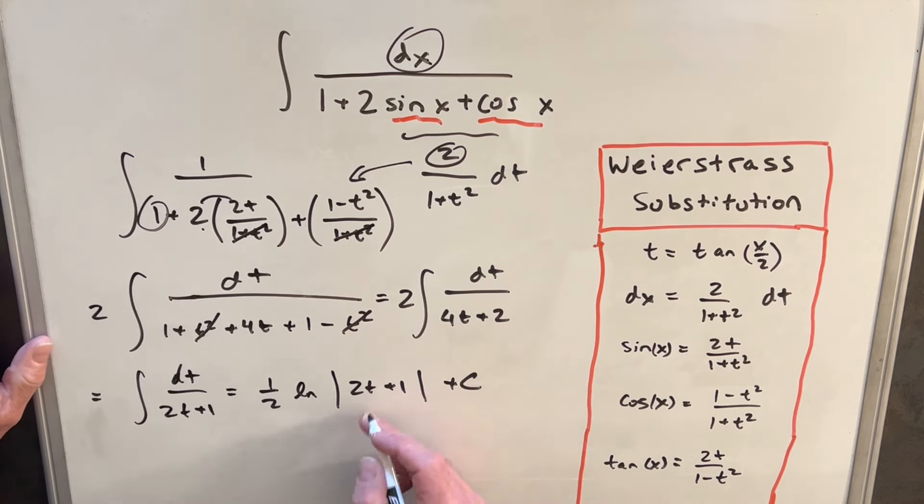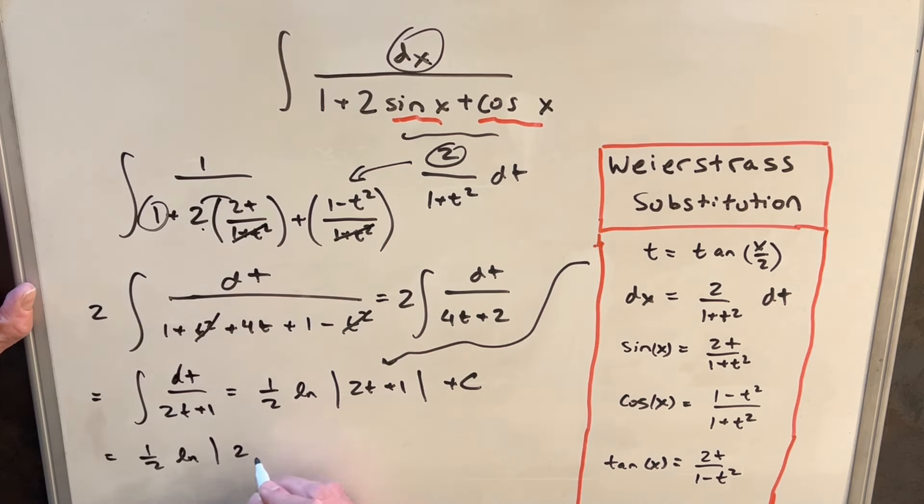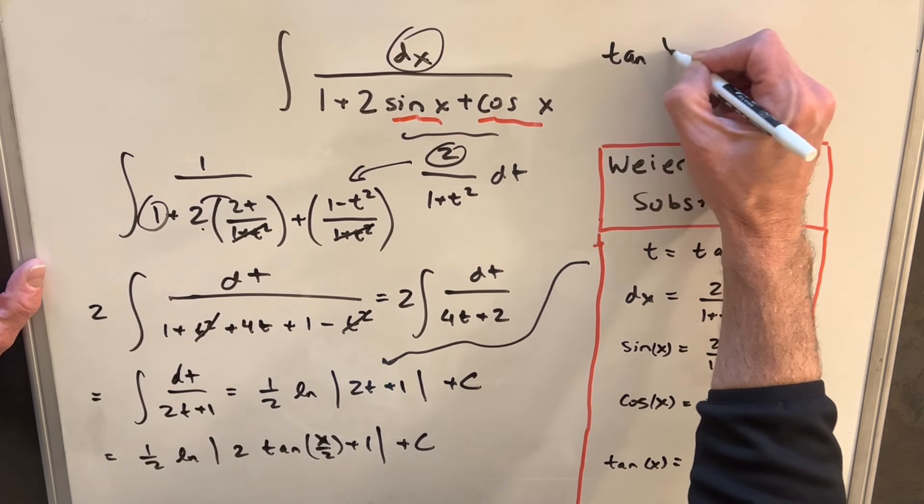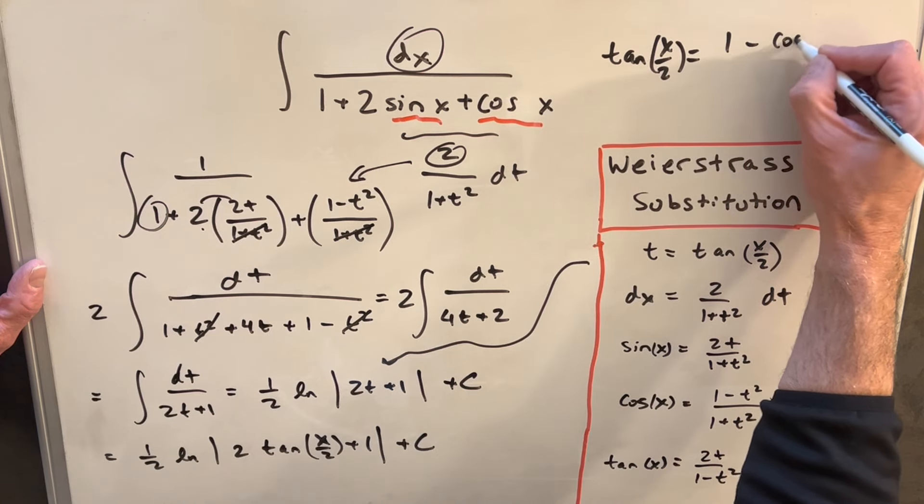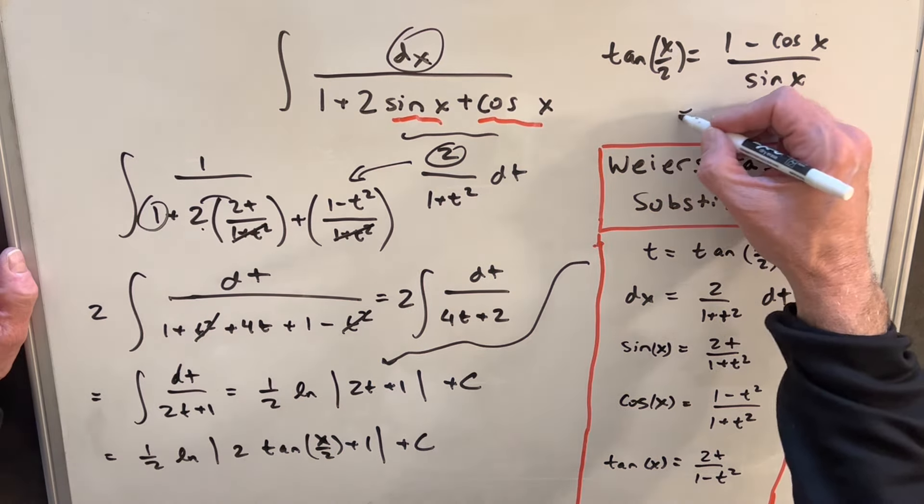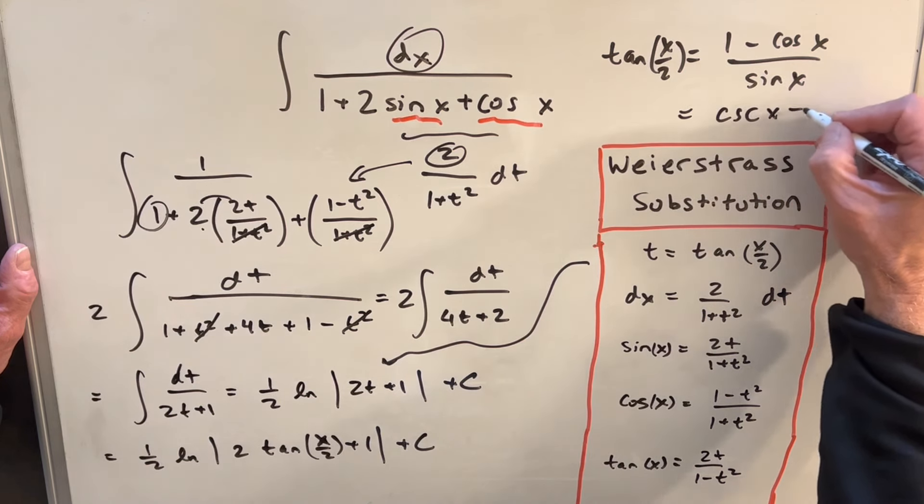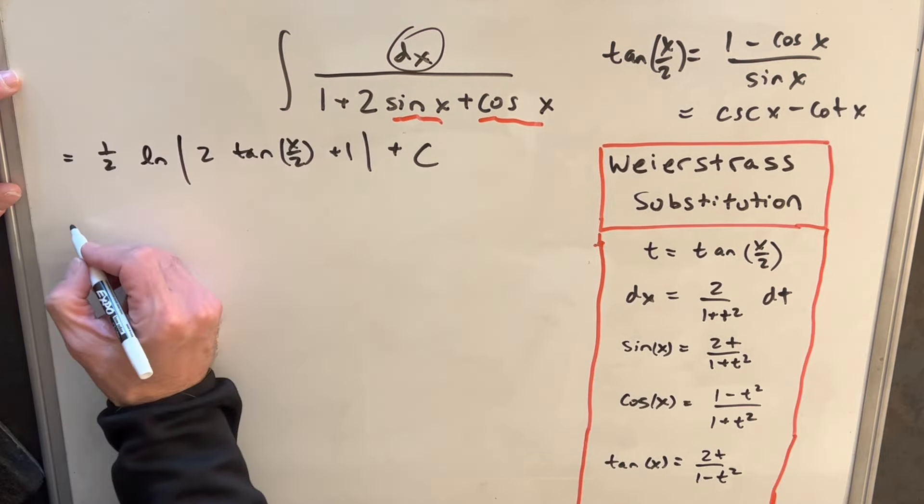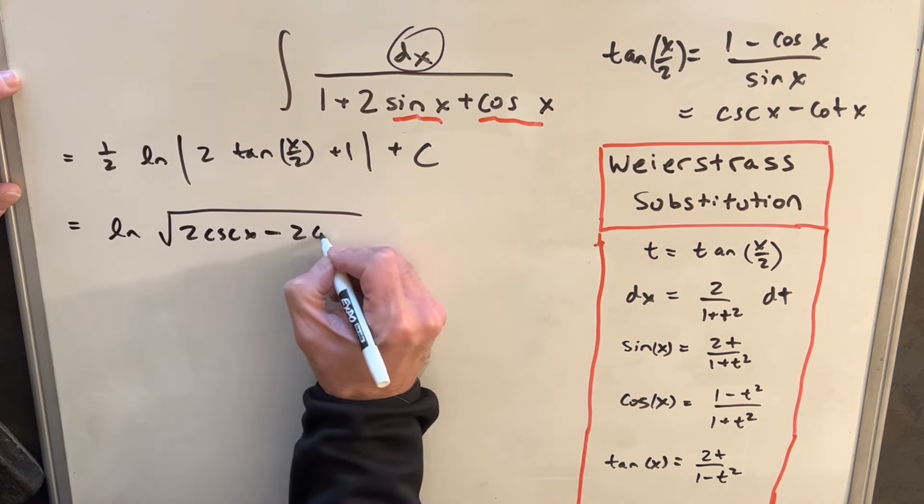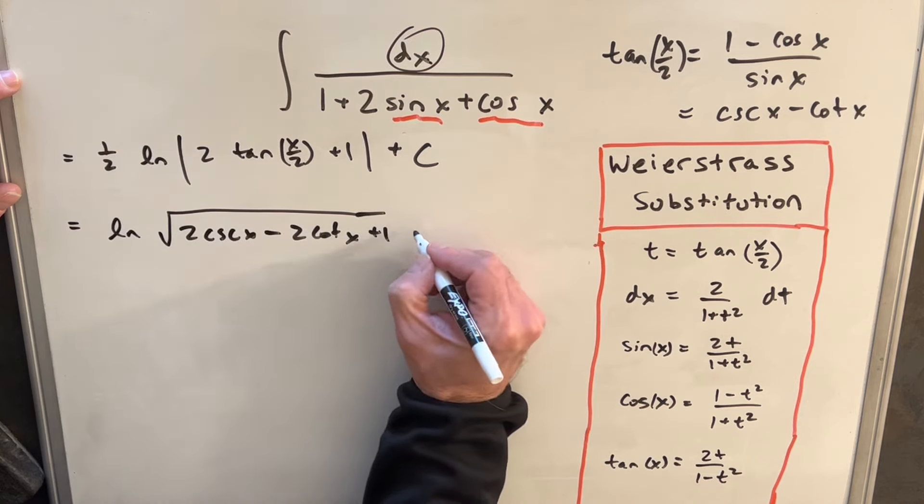Okay, then the only thing left to do is back substitute, but we have our t value. It's tan of x over 2. So we can rewrite this as half ln absolute value 2 tan x over 2 plus 1 plus c. Now from here we could leave this, and this would be our answer. But we also could simplify a little bit if we like. We have this identity tan x over 2 is the same thing as 1 minus cos x over sine x. And then actually if you just simplify that a little more, this is the same thing as cosecant x minus cotangent x. I think what I'll do is use that half and we'll write it as square root. So we could write our answer this way: square root of 2 cosecant x minus 2 cotangent x plus 1 plus c.